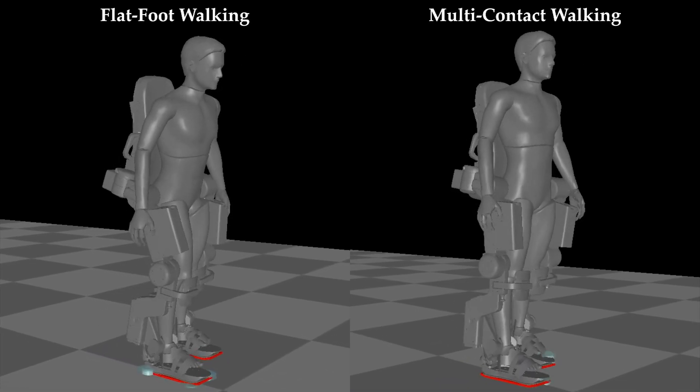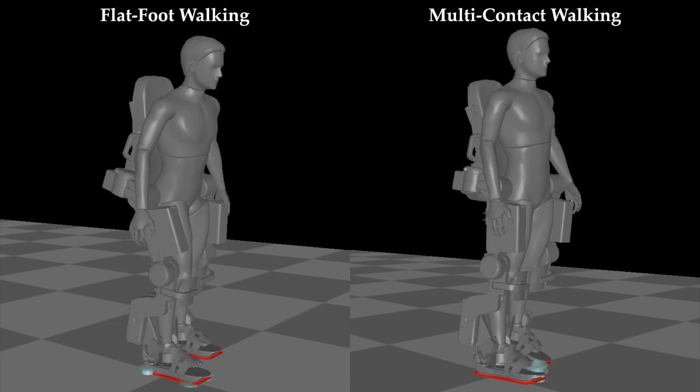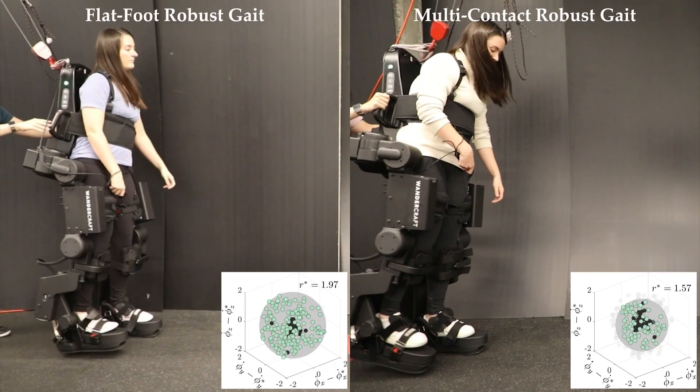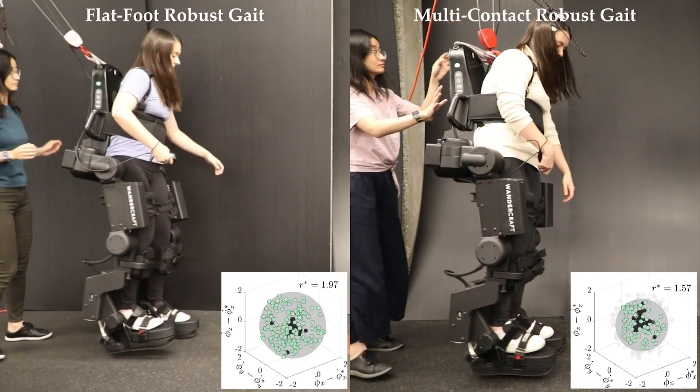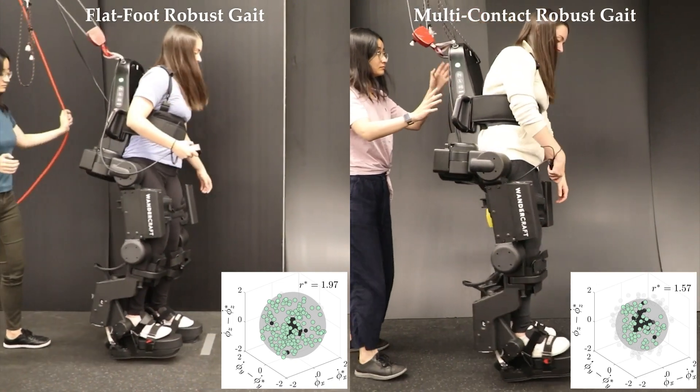We demonstrate this approach for both flat-foot and multi-contact exoskeleton locomotion. For both behaviors, the gaits generated to optimize the robustness metric yield stable walking on hardware.